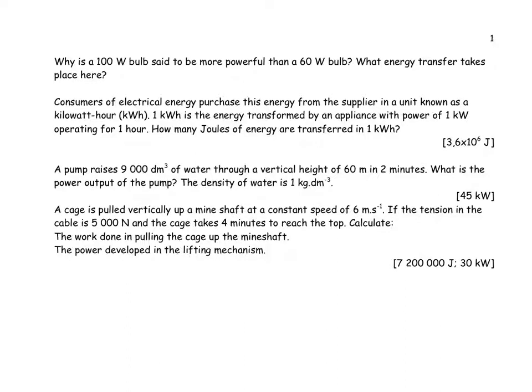Why is a 100 watt bulb said to be more powerful than a 60 watt bulb? Well, what does 100 watts mean? Power is work done divided by time. So 100 watts means that 100 joules is transferred every one second, while 60 means that only 60 joules is transferred every one second. So that means that there is more energy given to every charge as it passes in a second.